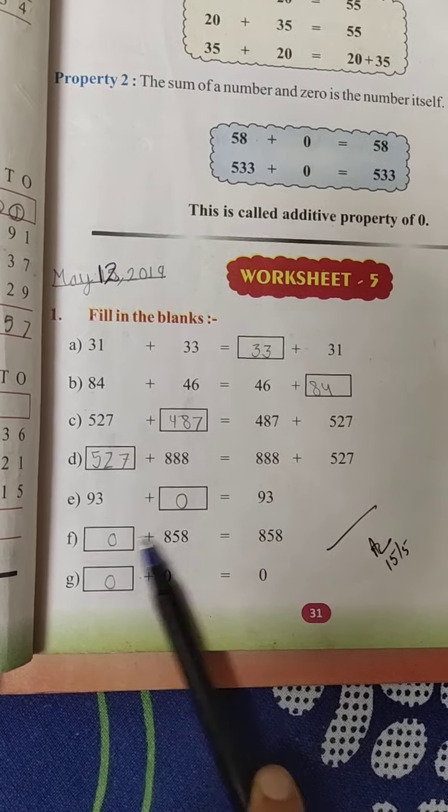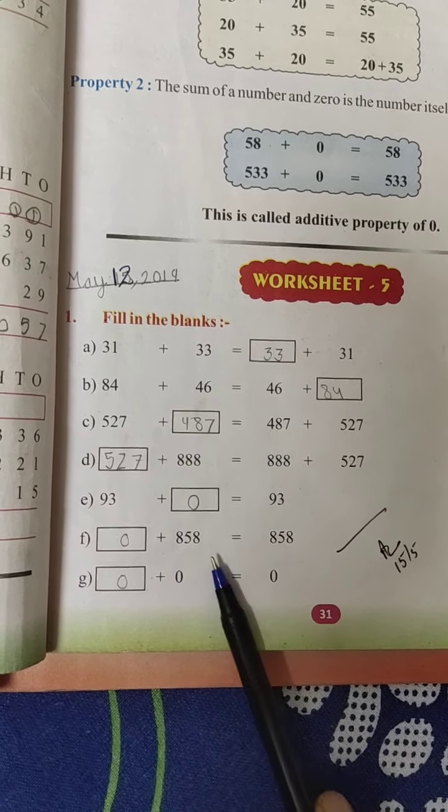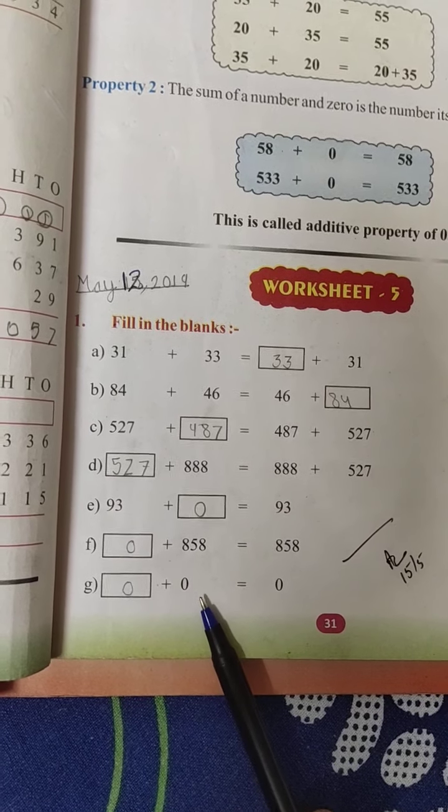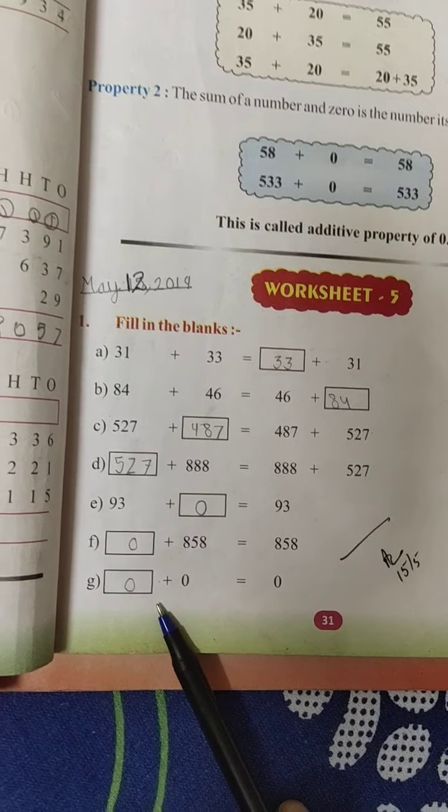Similarly, blank plus 858 is equal to 858. What should I add to 858 to get 858? 0. What should I add to 0 to get 0? 0.